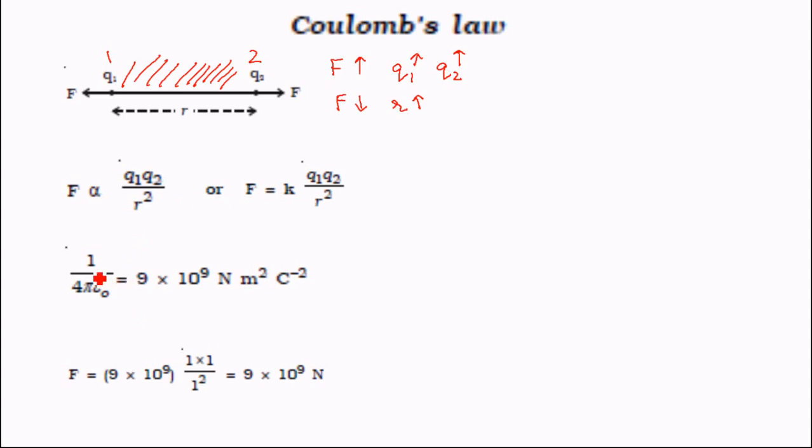which is 1 by 4 pi epsilon node. And this is called 1 coulomb. So I hope this is understandable.